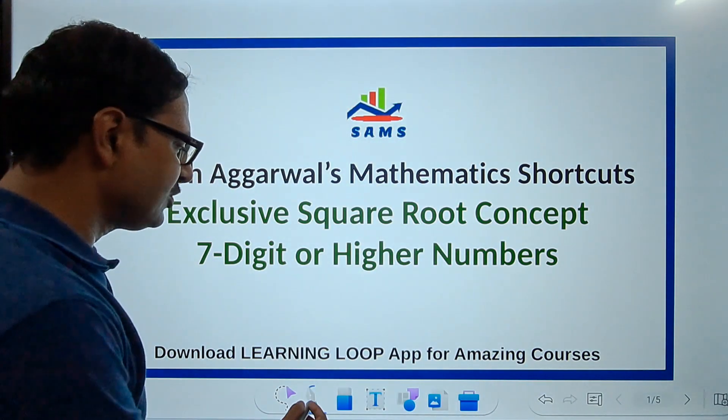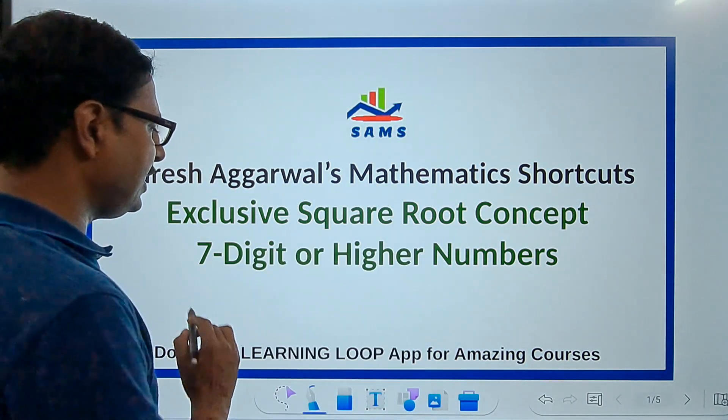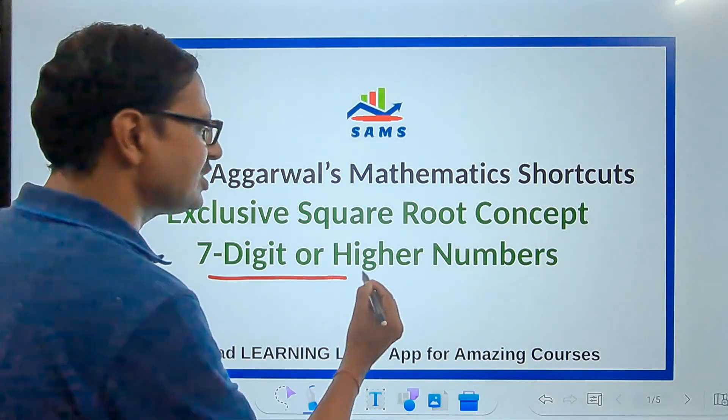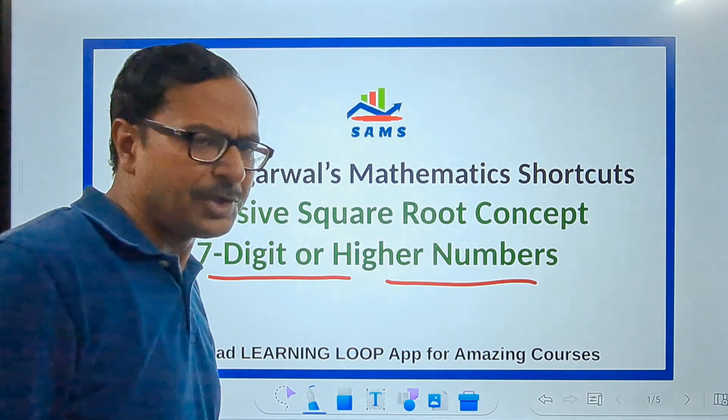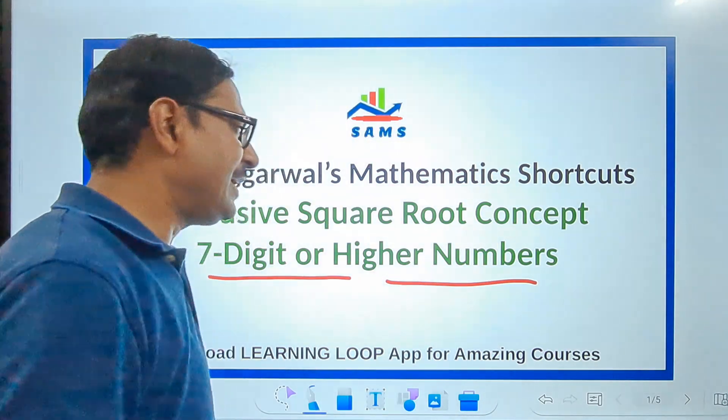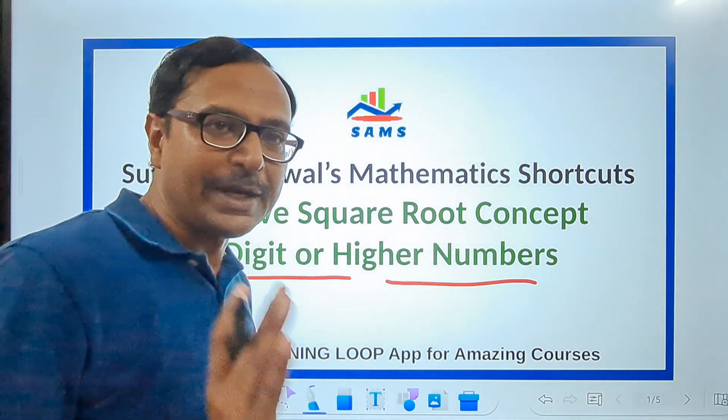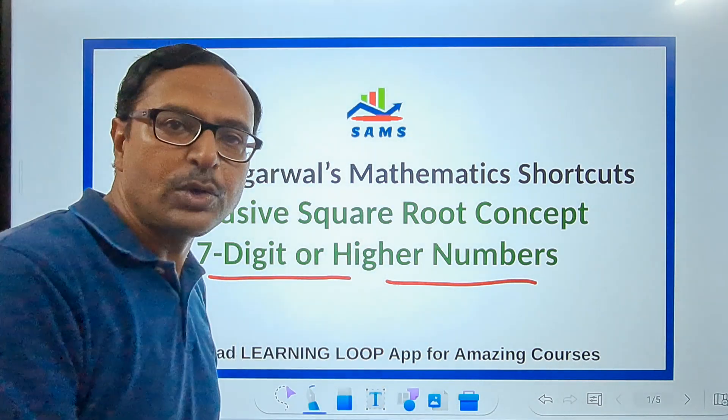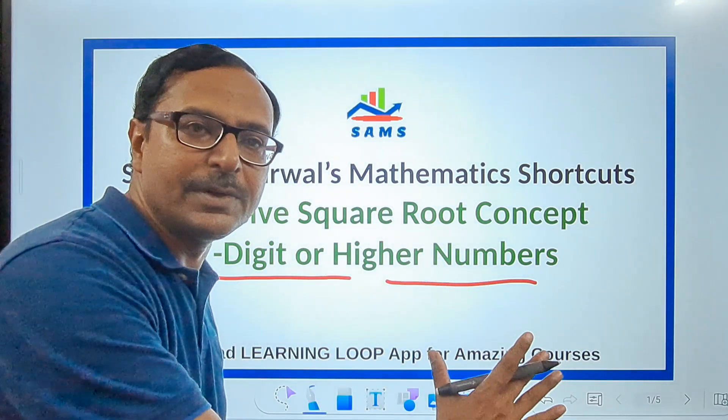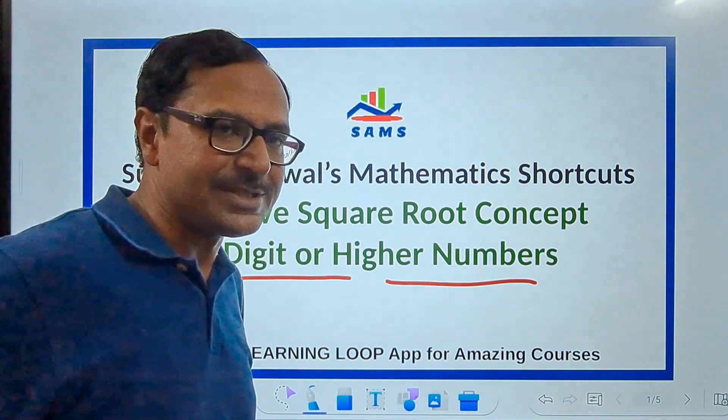Do you have a method through which you can find the square root of seven digit or higher numbers like 8 digit, 10 digits, 12 digits? Very difficult, right? I'll tell you the method through which you can crack the multiple choice questions based on finding the square root of seven digit or higher numbers using this amazing concept.